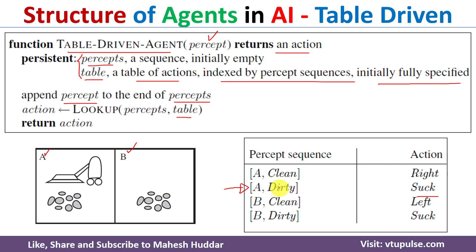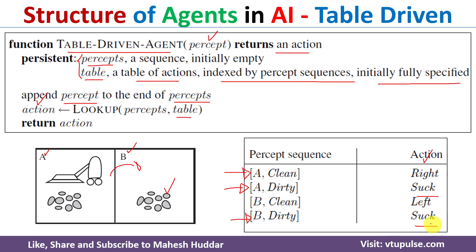If the entry is found, the associated action is returned. For example, if the agent senses location A as dirty, it looks up 'A dirty' in the table and the action 'suck' is returned. Once suck is executed the room becomes clean. The agent senses again — now A is clean — looks it up in the table, and the action 'right' is returned, meaning the agent moves right. It then senses location B as dirty, finds 'B dirty' in the table, and 'suck' is returned. This cycle repeats.